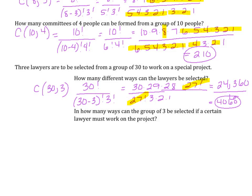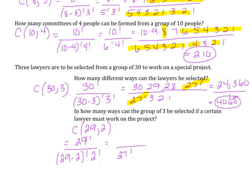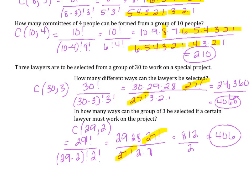Now, let's say we want to find a group of 3 where a certain lawyer must work on the project. Since one spot is already filled, I only have 29 people to choose from and only need to fill 2 more spots. This is equivalent to 29 factorial over 29 minus 2 factorial times 2 factorial. 29 minus 2 is 27 factorial, so I stop at 29 times 28 times 27 factorial — the 27 factorials cancel. 29 times 28 is 812 divided by 2, which is 406. So there are 406 options when one lawyer is already assigned.